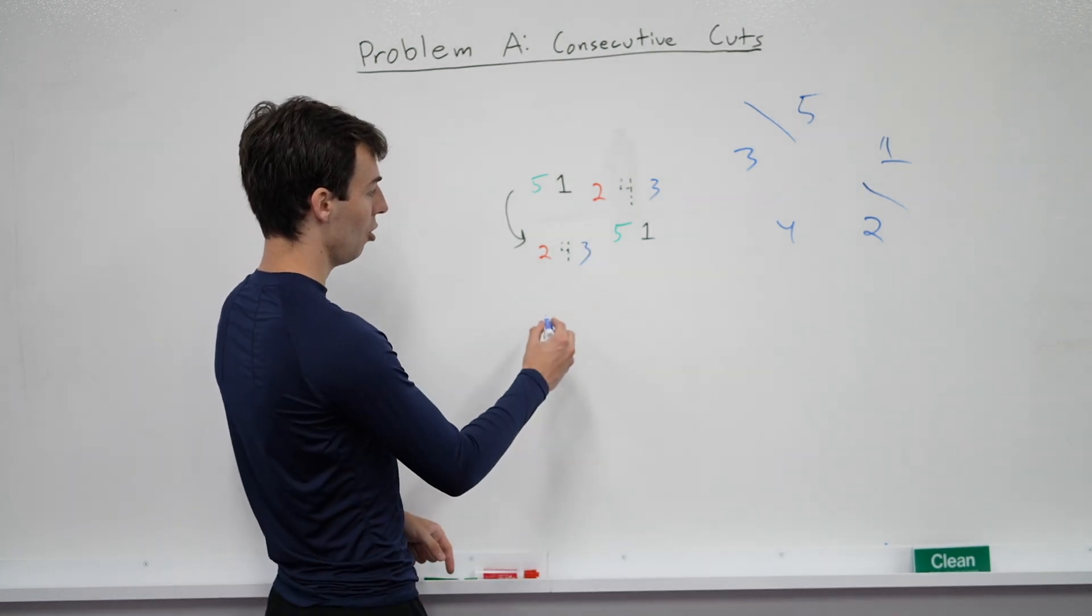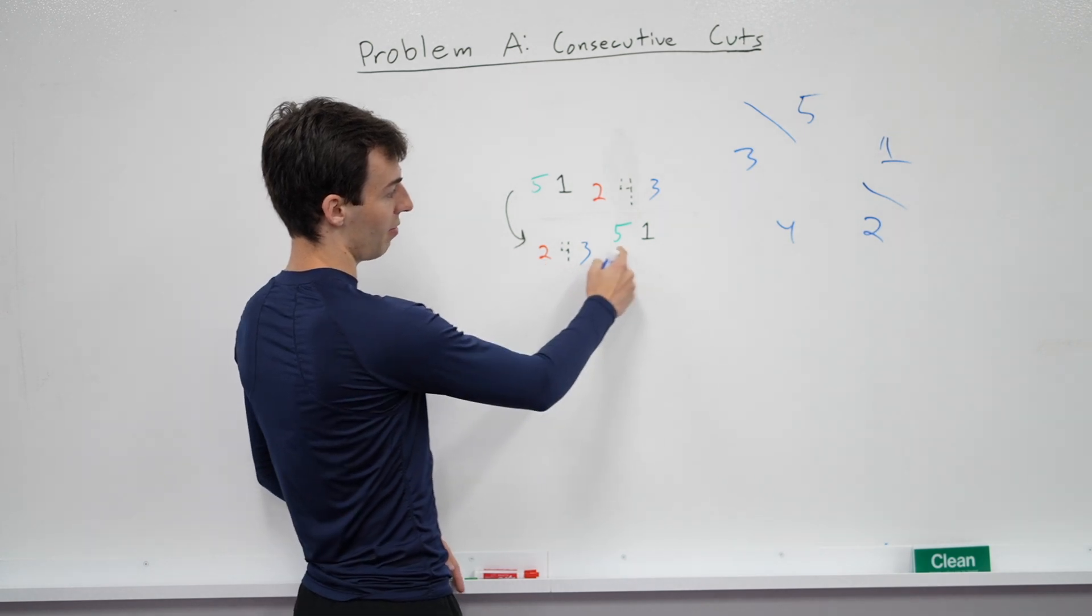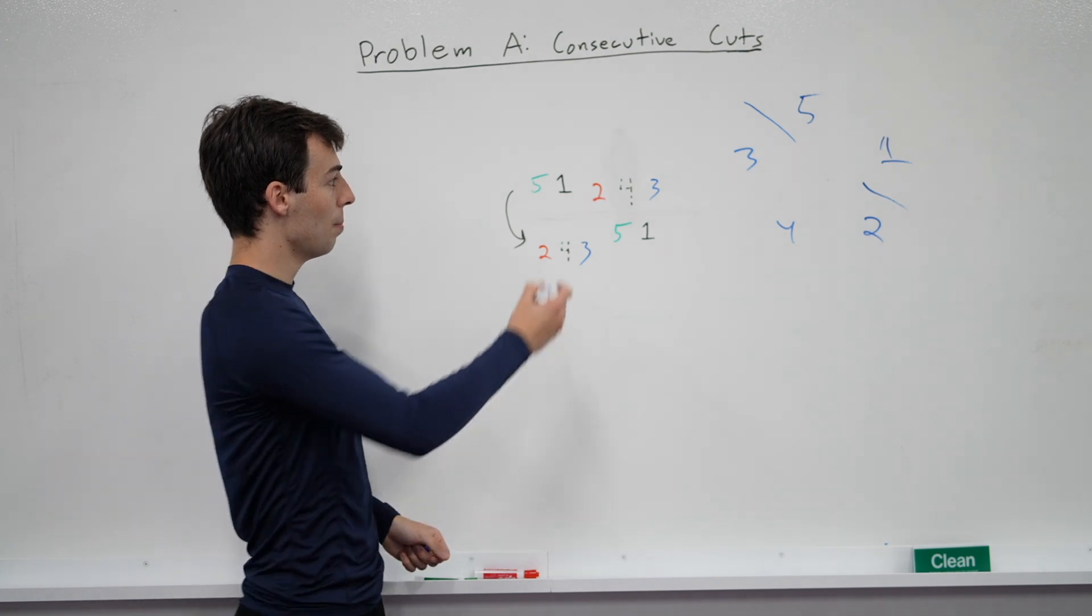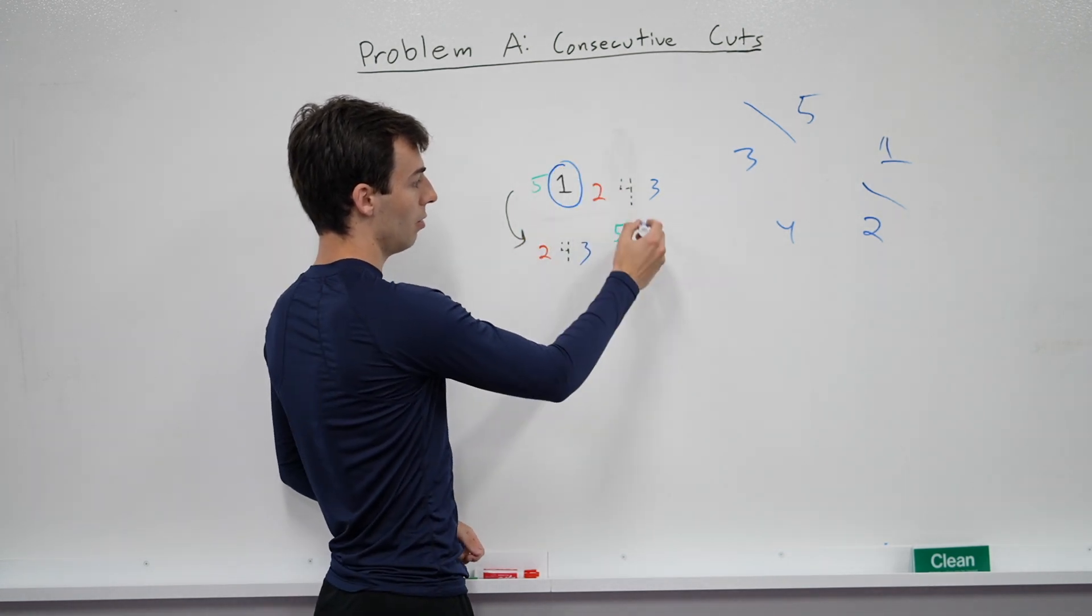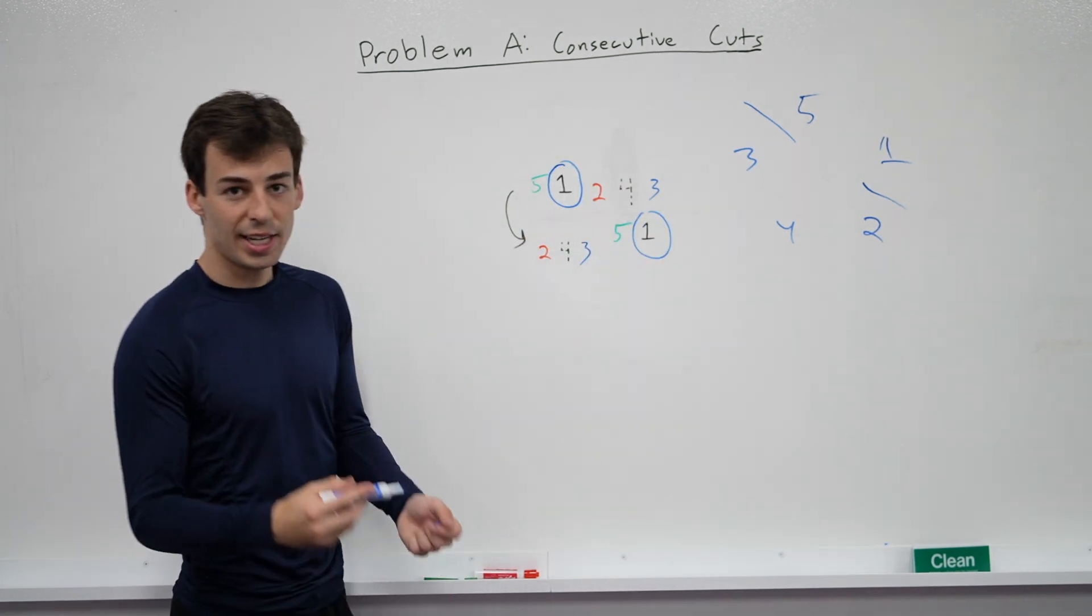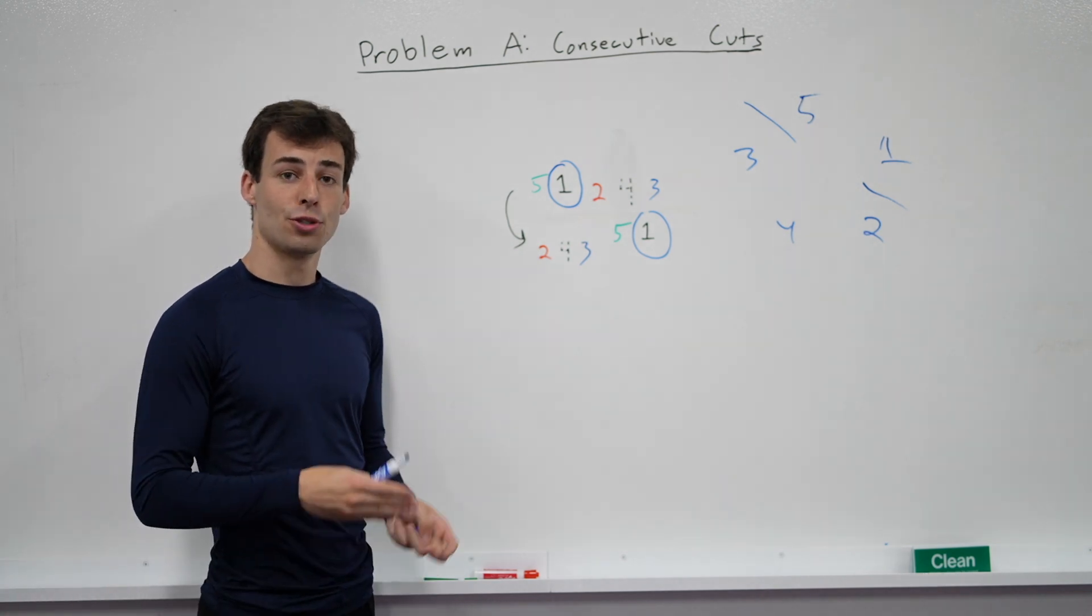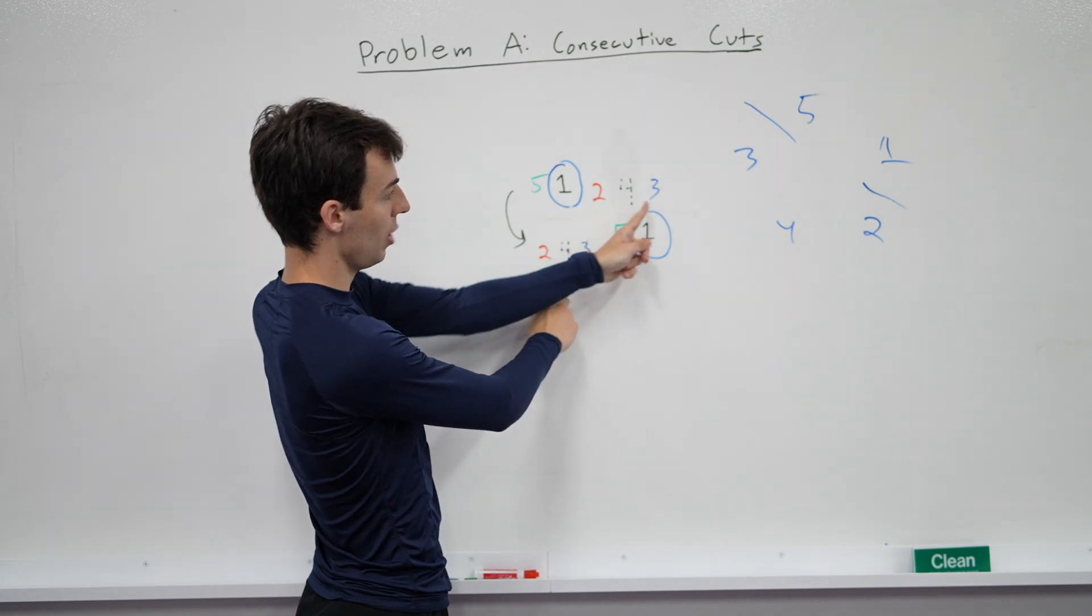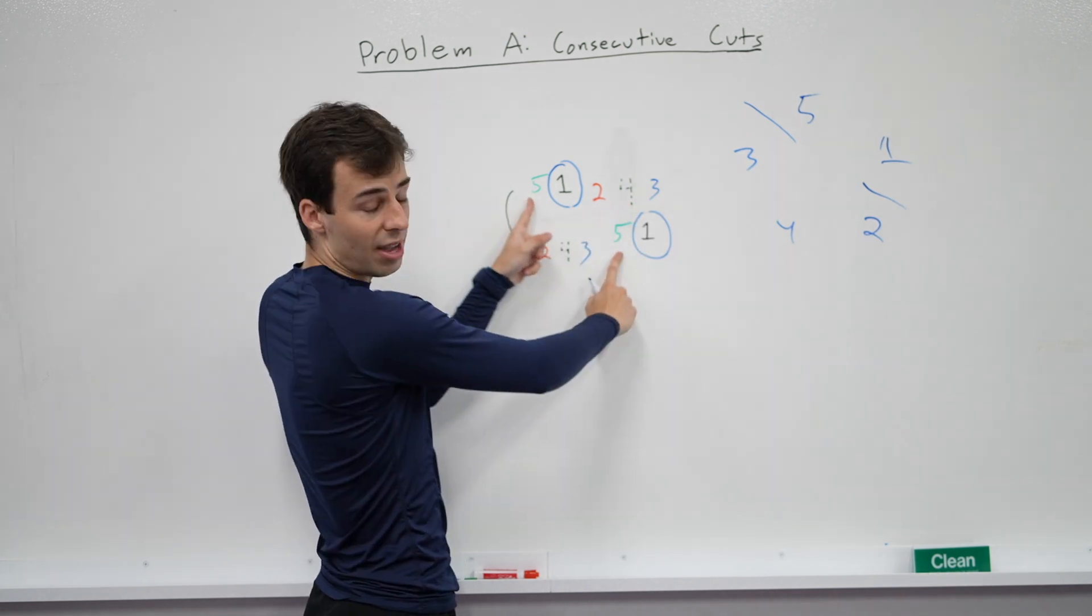So if we have another example here, maybe the example is 2, 4, 3, 5, 1, we can check whether these two things match in problem A1 by finding the index of position 1 and then checking the n things after that to make sure they all match. So the 1 and the 1 match, the 2 and the 2 match, the 4 and the 4 match, the 3 and the 3 match, and the 5 and the 5 match.